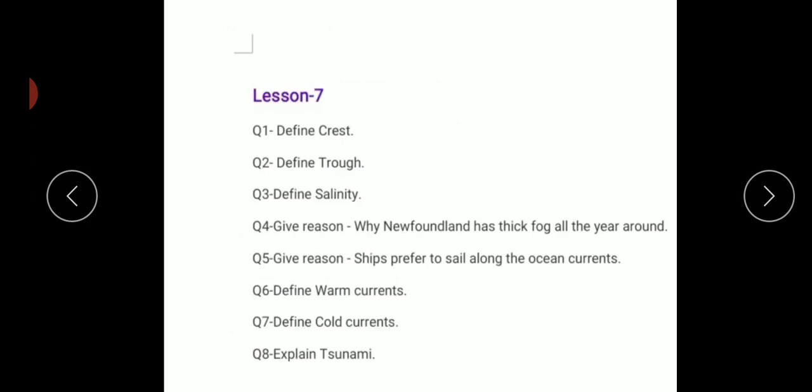Chapter 7: What is crest? Crest is basically the raised part of the wave, whereas the lower part is called trough. What is salinity? Salinity is the amount of salt present per unit of ocean water.